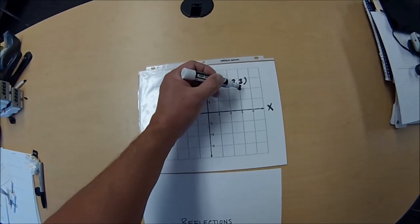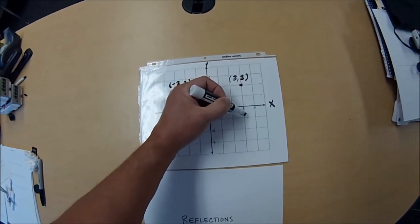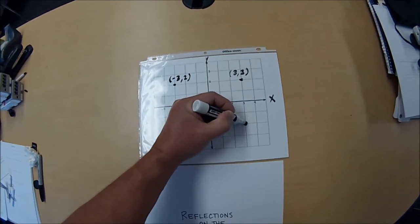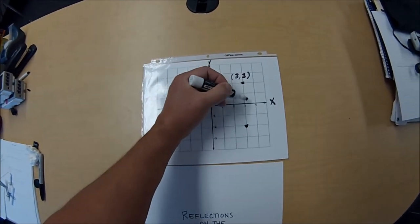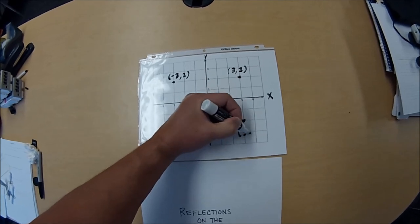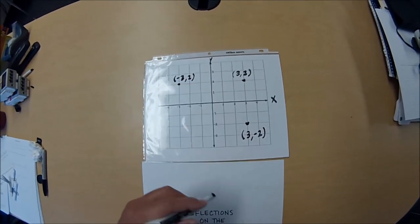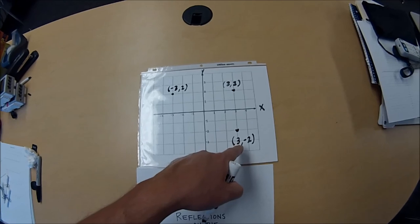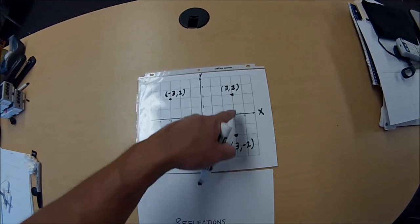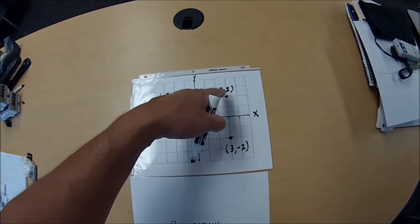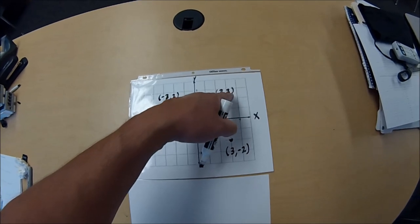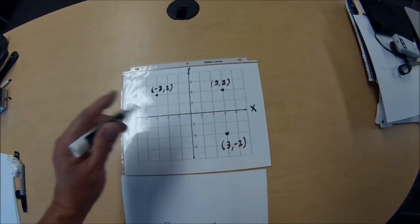Again, we can just count 1, 2, 1, 2, and it would reflect to the ordered pair (3, -2). And hopefully the students in this case now will see, okay, the y-coordinate changed from a positive 2 to a negative 2.